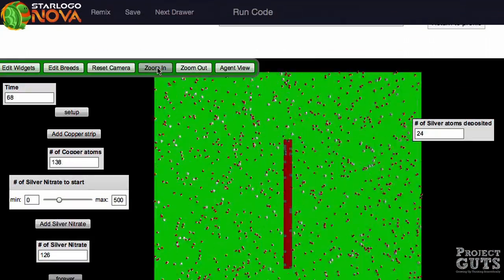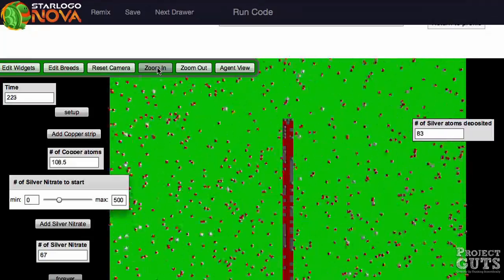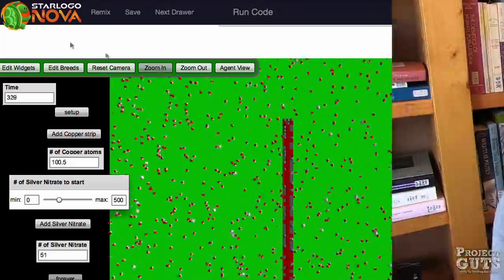We collect data using the graphs and data boxes in StarLogo Nova. We can see the changing values of different variables over time.